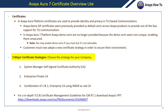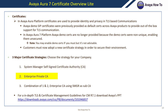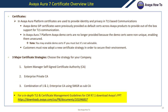There are three major certificate strategies: Strategy 1 — System Manager Self-Signed Certificate Authority, which is what we chose. Strategy 2 — Enterprise Private CA. Strategy 3 — a combination of both, using Enterprise CA with System Manager as a Sub-CA. For an in-depth TLS and Certificate Management overview for Avaya Aura, you can download a PowerPoint presentation via the link below.